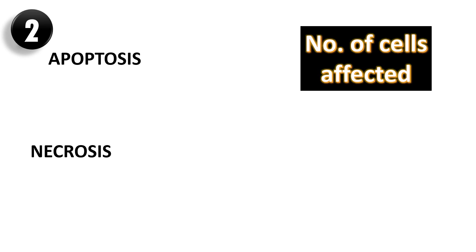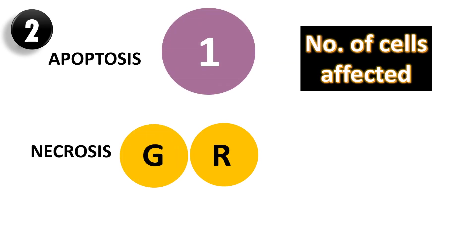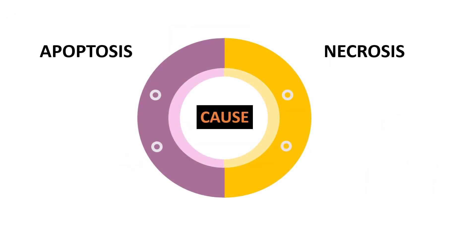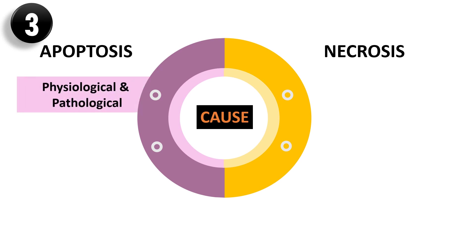The second difference is that apoptosis occurs in a single cell, while necrosis always affects a group of cells. The third difference is in the cause. The cause of apoptosis can be both physiological, like hormone-related, and pathological, like radiation. While the cause of necrosis is almost always pathological.